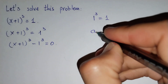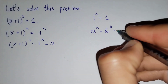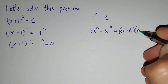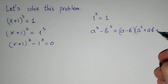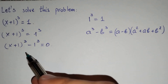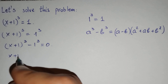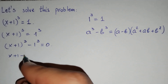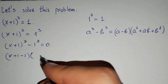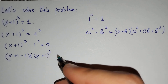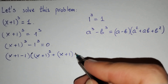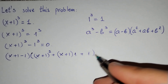We know that a³ minus b³ equals (a minus b) times (a² plus a·b plus b²). We apply this formula and write (x + 1 minus 1) times ((x + 1)² plus (x + 1)·1 plus 1²) equals 0.